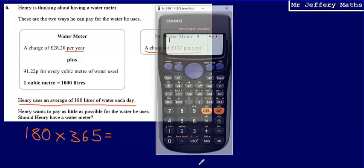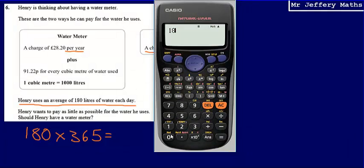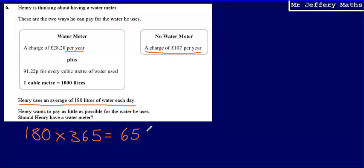So 180 multiplied by 365 is going to give us 65,700. So he uses 65,700 liters of water per year.